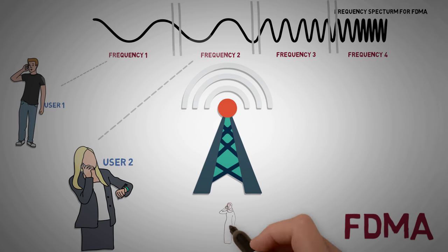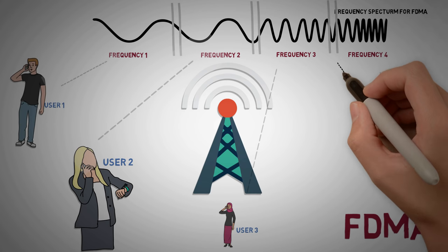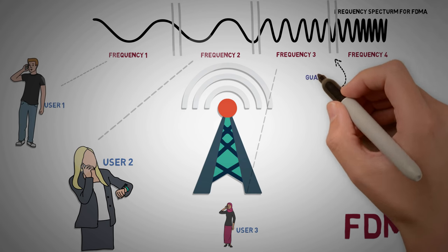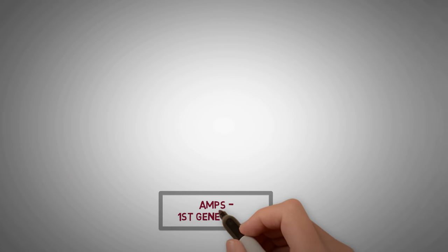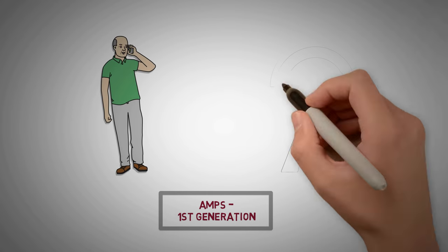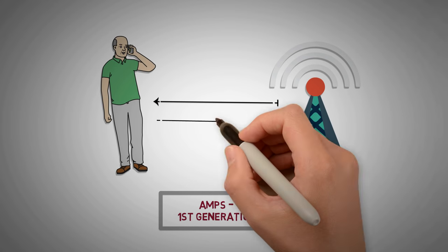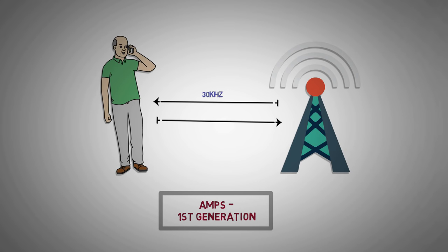Generally the data is generated at baseband and modulated at varying radio frequencies. Guard bands are introduced to avoid any interference. AMPS, or the first generation analog systems, used FDMA to provide each user a duplex channel with one-way bandwidth of 30 kHz.